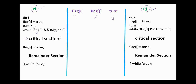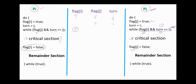Now suppose while process Pi is executing in its critical section, process Pj wishes to enter its critical section. Pj sets flag[j] to true and turn to i, making the condition true — so process Pj is not allowed to enter and must wait. After Pi completes its critical section, it sets flag[i] to false, making the condition false, and process Pj is now allowed to enter. Each process, after completing the critical section, sets its flag to false, allowing the other process to enter.